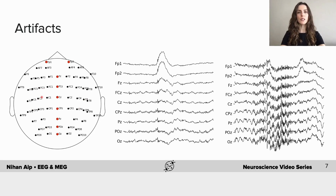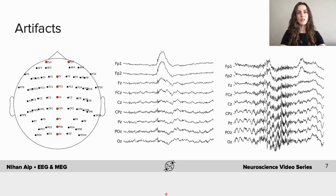When we record EEG and try to interpret the data, we should be careful of artifacts, which are signals not generated by the brain. We should recognize and clean these artifacts from the data; otherwise, we may have confusion in the interpretation of EEG signals. There are two types of artifacts: physiological ones and non-physiological ones. Non-physiological artifacts can result from electrical phenomena or devices like a cell phone. An example of a physiological artifact is an eye movement artifact caused by blinking. Another is a muscle artifact, showing high-frequency fluctuation, which will occur if participants are squeezing their teeth. The data should be cleaned from all these artifacts through pre-processing before running in-depth analysis.